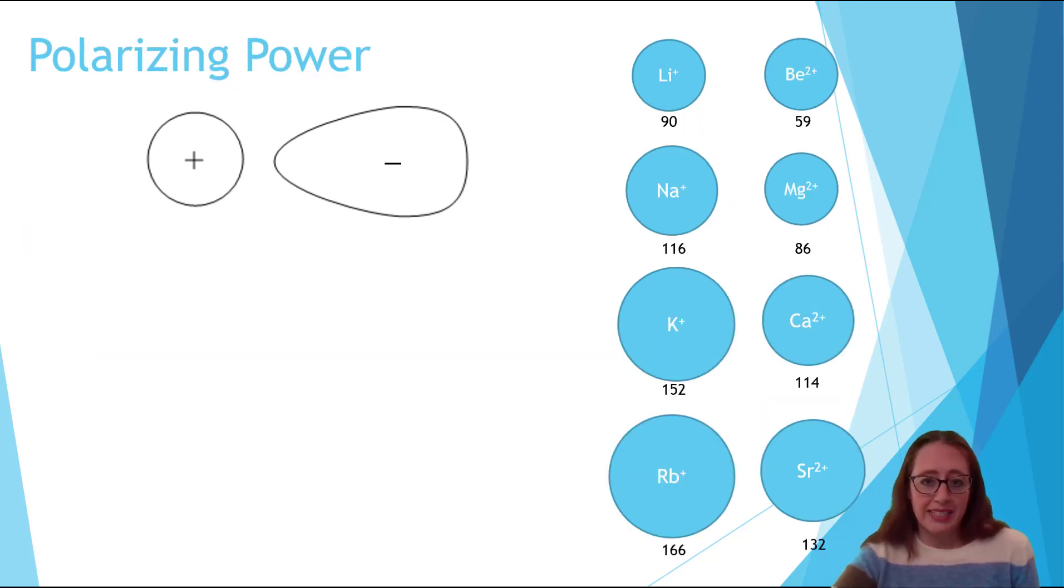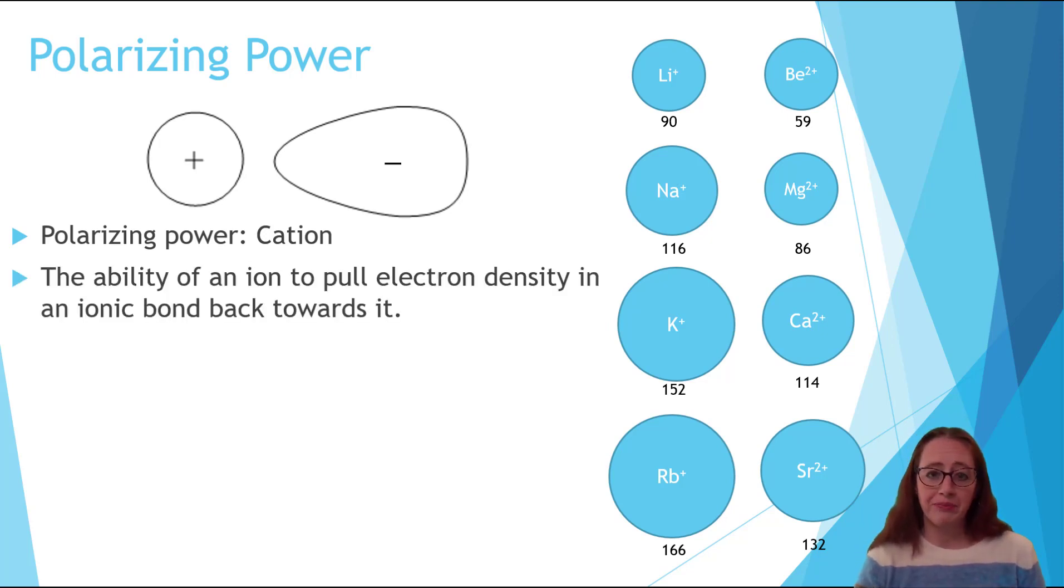Now let's talk polarizing power. The positively charged species is able to pull back some of the electron density in an ionic bond. How able it is to do this is what we call polarizing power. Similar to our last discussion, there are two things which affect polarizing power. Both of them are because it increases the valence shell effective nuclear charge.